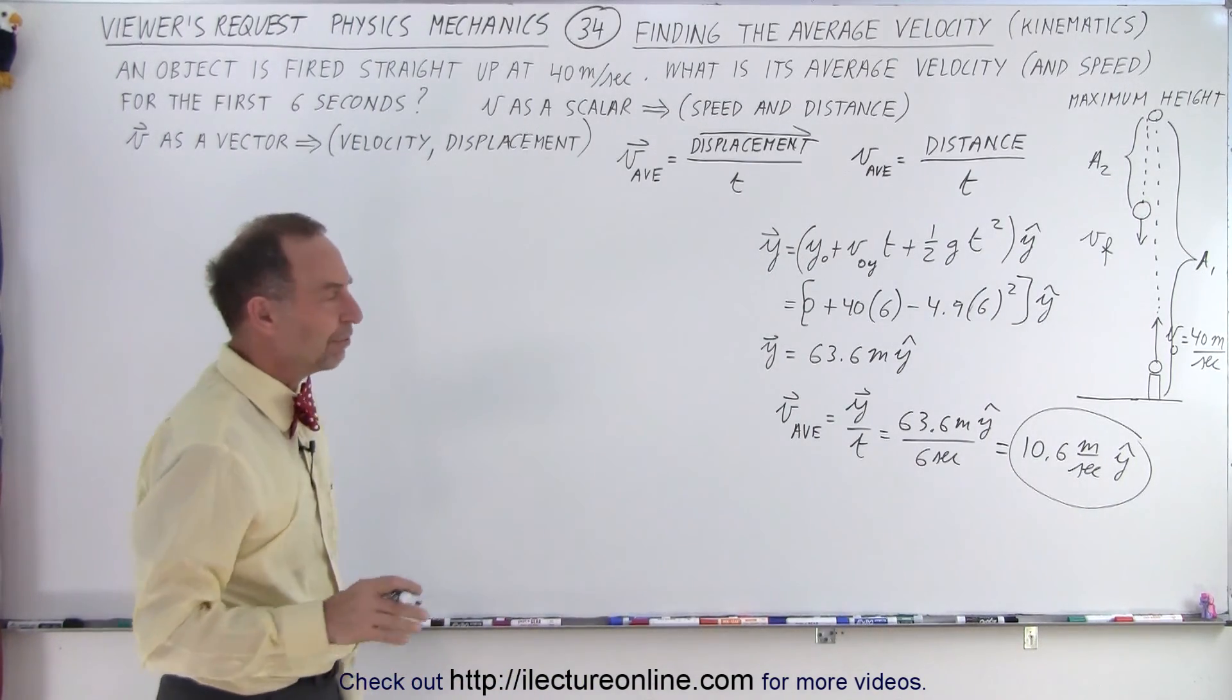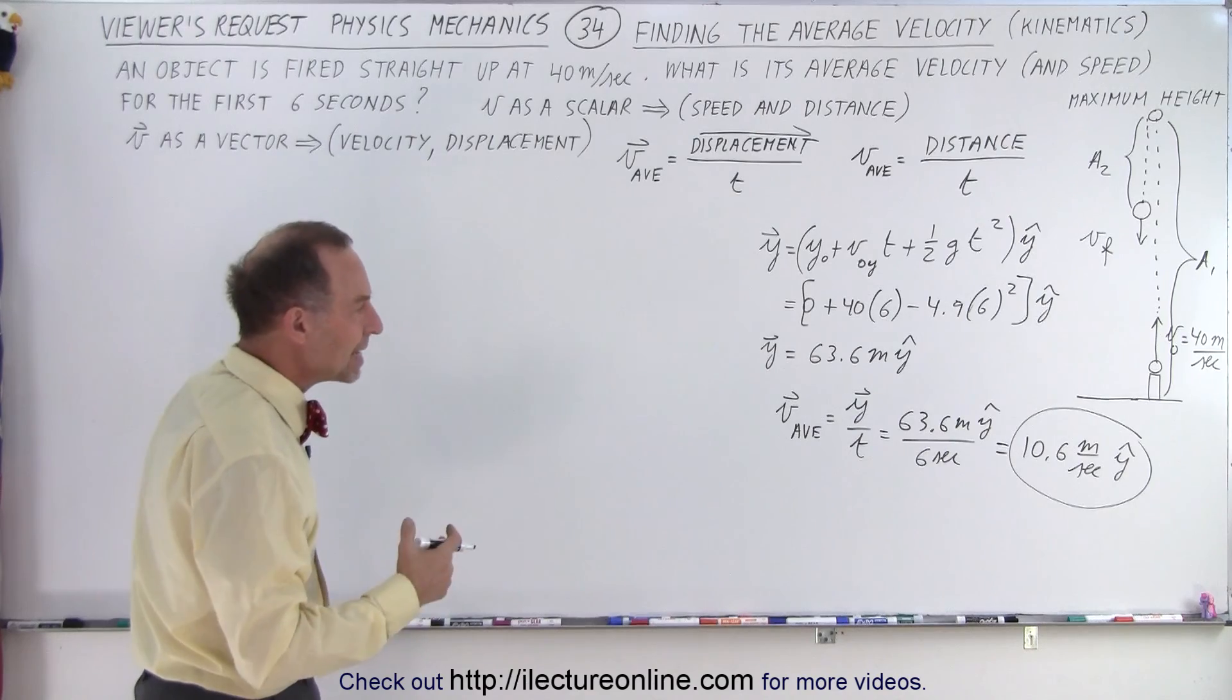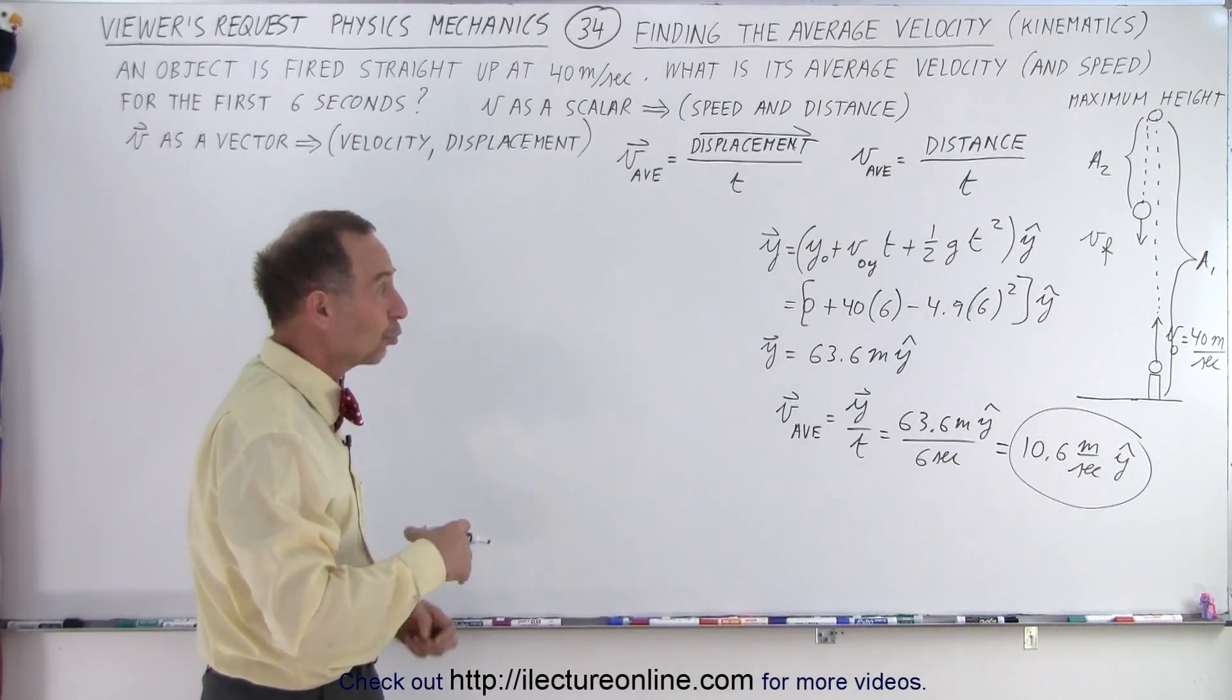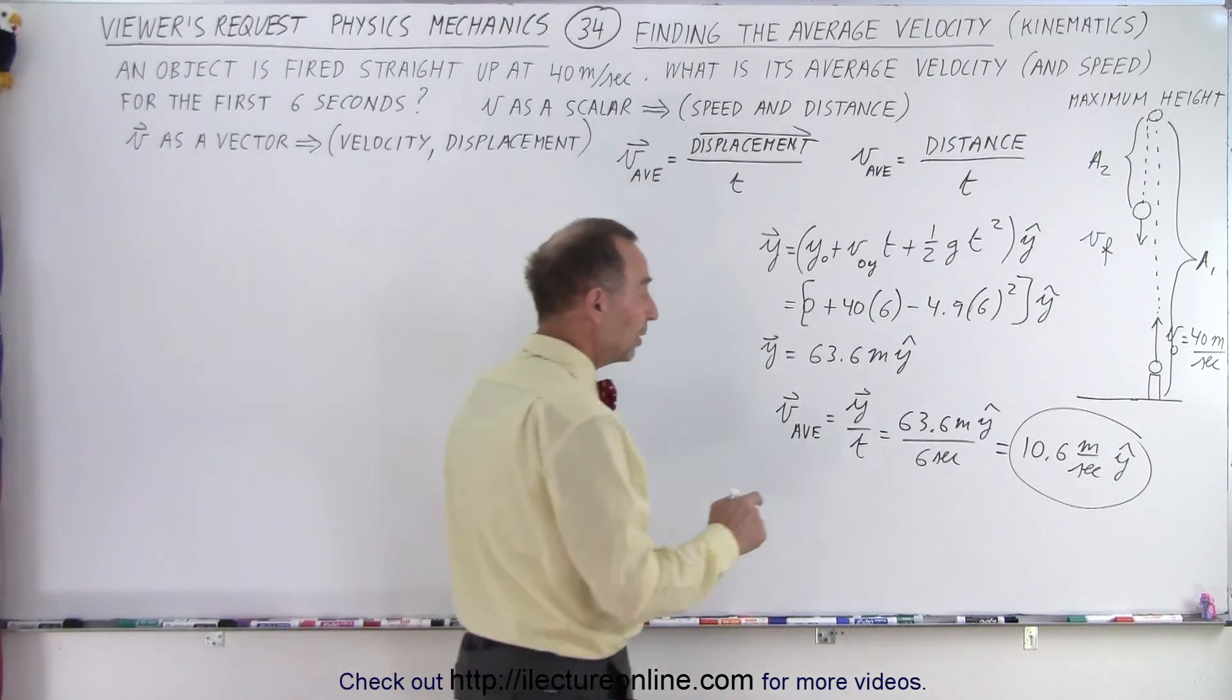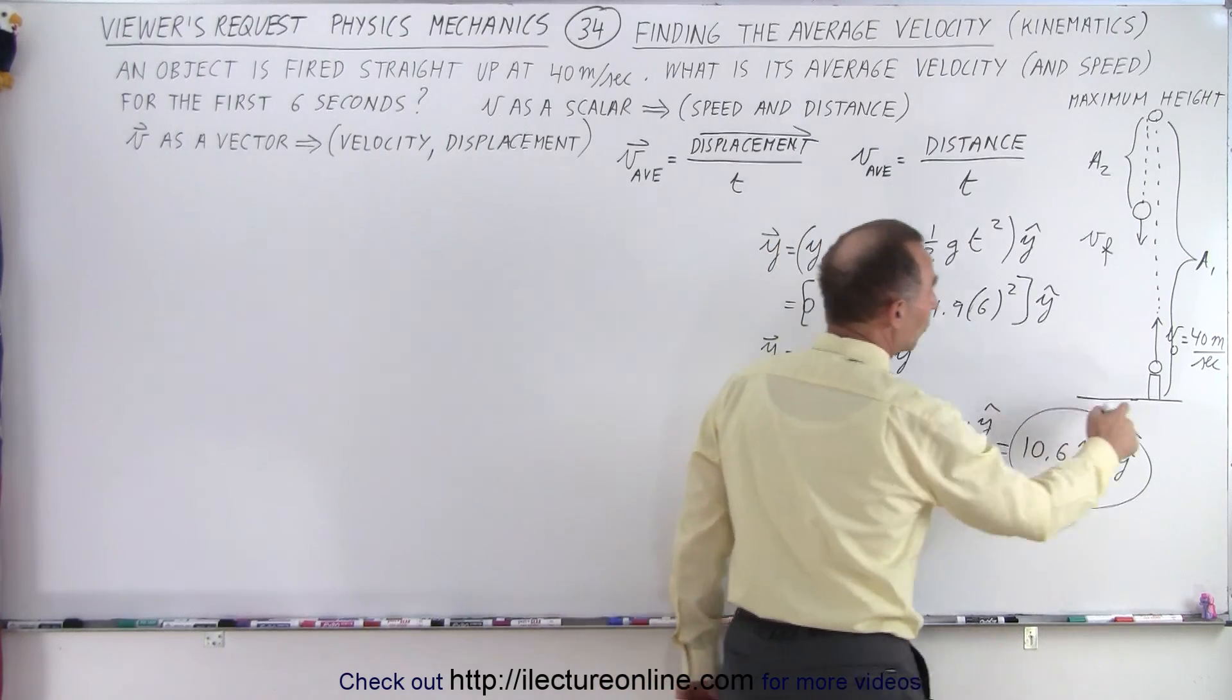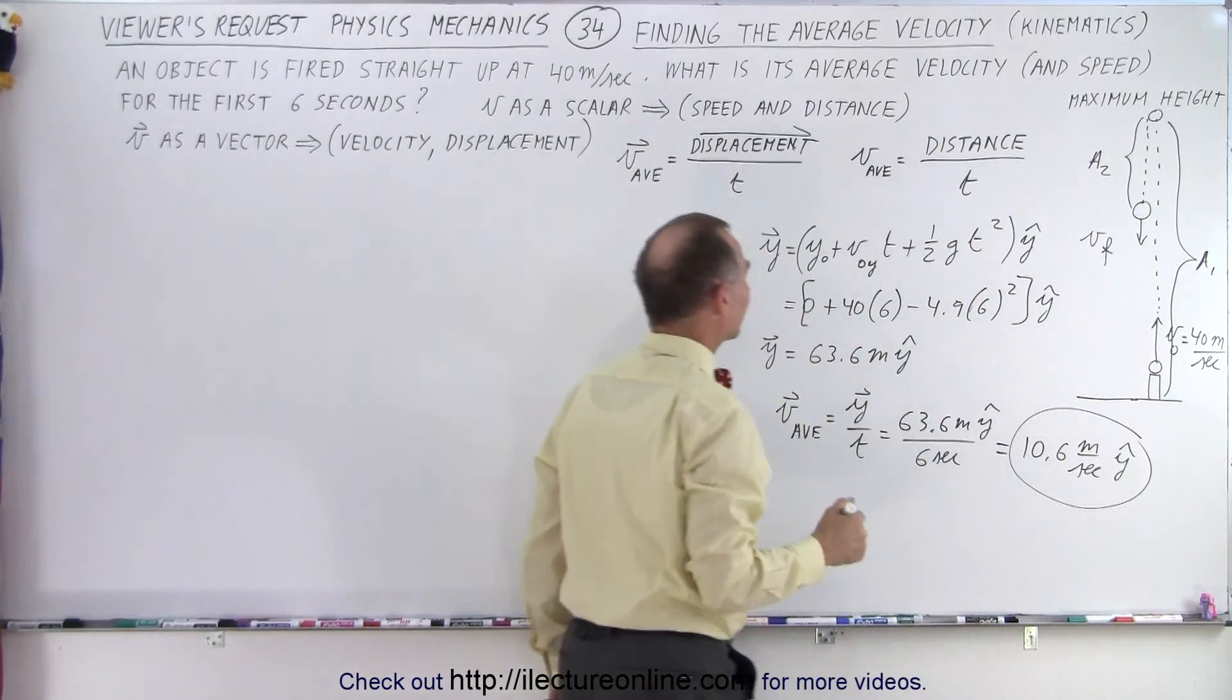So this becomes 10.6 meters per second in the y direction. So that's the average velocity in vector format. But now we need to find the average speed, and we're disregarding direction, which means we need to find the total distance traveled. So we already know where we end up at 63.6 meters, but we have to find the maximum height.